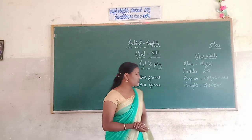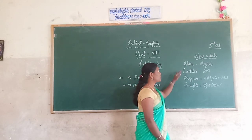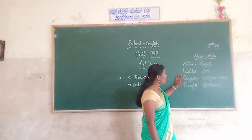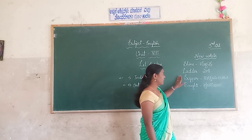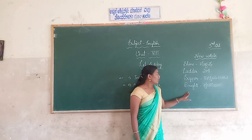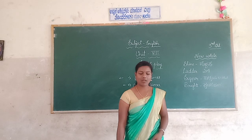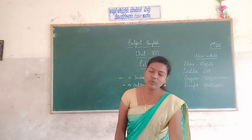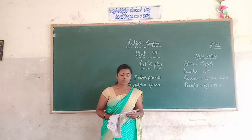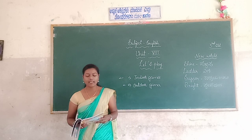Let us start the poem. First, I will introduce the new words from this poem: shine, ladder, aim, hoop, bright, precaution. Pick up. Unit A: Let's Play.